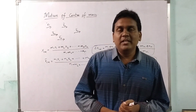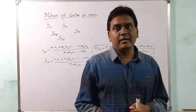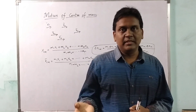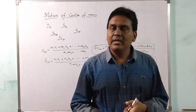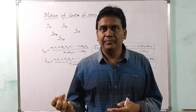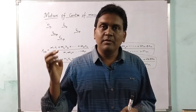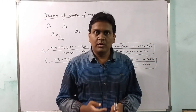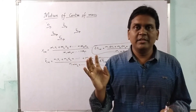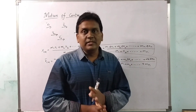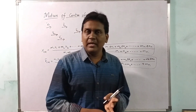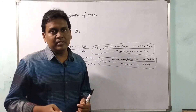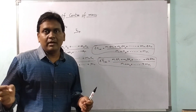If we know the displacement of the center of mass, we can easily find the velocity of the center of mass. Velocity is change in displacement per unit time. If we know velocity, we can find acceleration — change in velocity per unit time. From acceleration we can find the force acting on the center of mass using Newton's second law: F = ma. So the key chain is: displacement → velocity → acceleration → force.